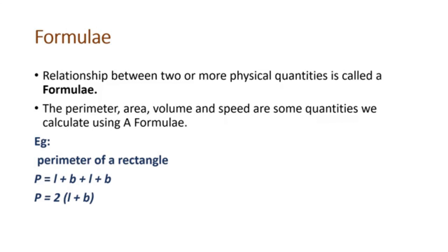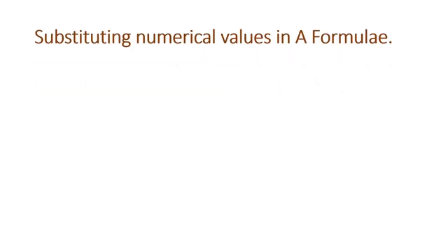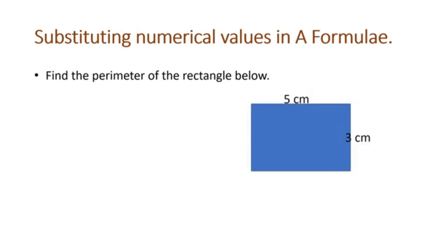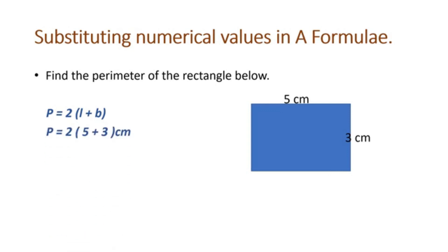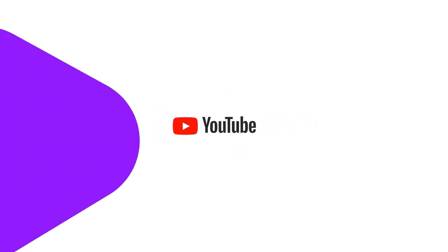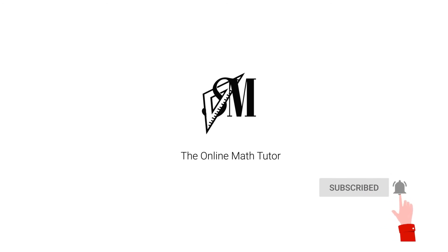Formulae are a type of equation where the unknown terms have specific meanings. When you substitute numerical values in a formula, you replace the unknown term with a number. For example, to find the perimeter of a rectangle with length 5 cm and breadth 3 cm, substitute l equals 5 and b equals 3: Perimeter equals 2 times (5 plus 3) equals 2 times 8 equals 16 centimeters. I hope I've made myself clear on equations and formulae. See you with another Smart Math tip — until then, goodbye.